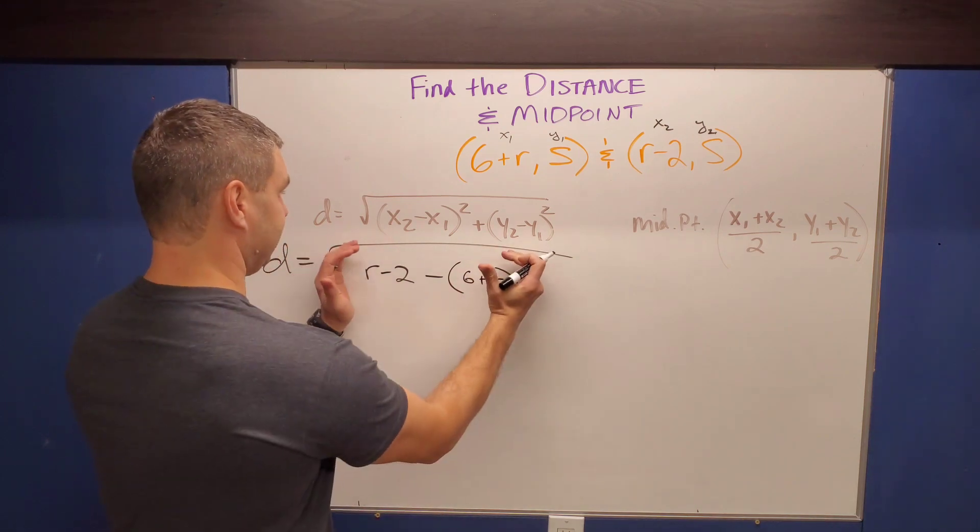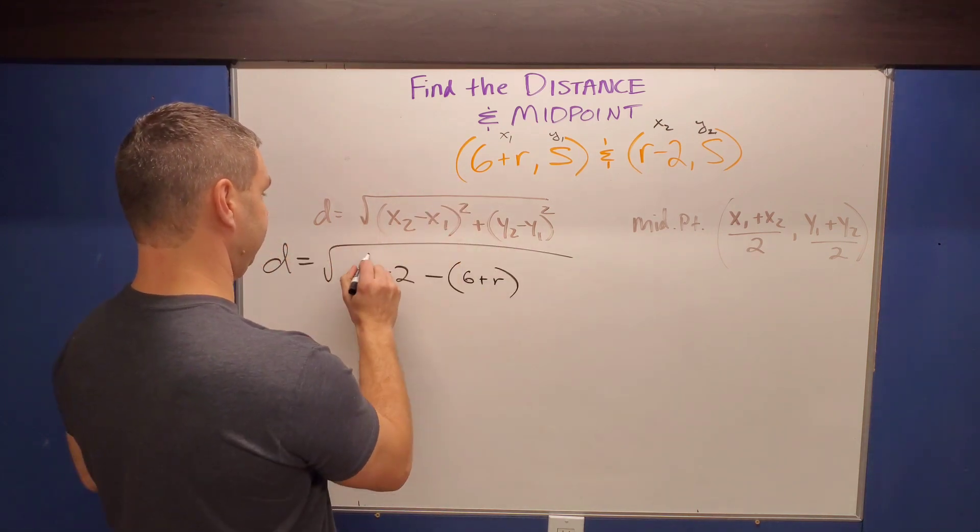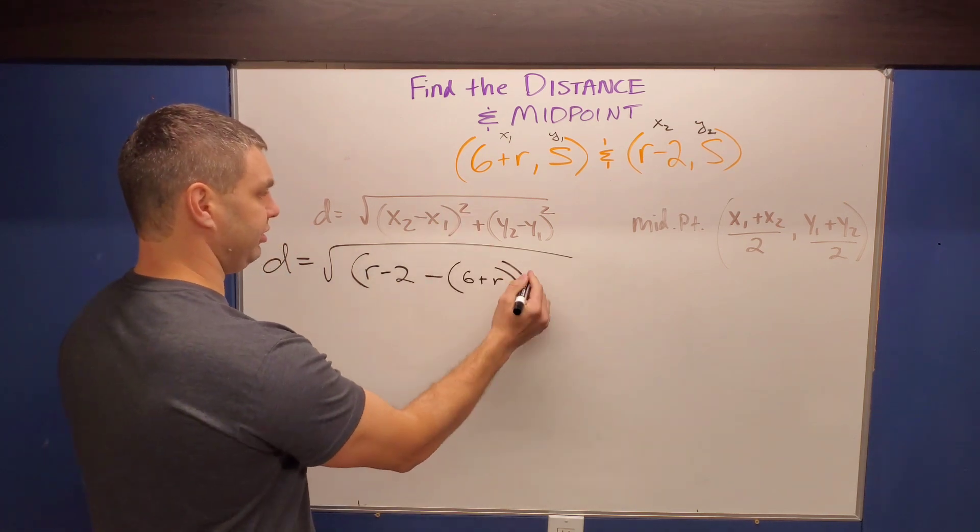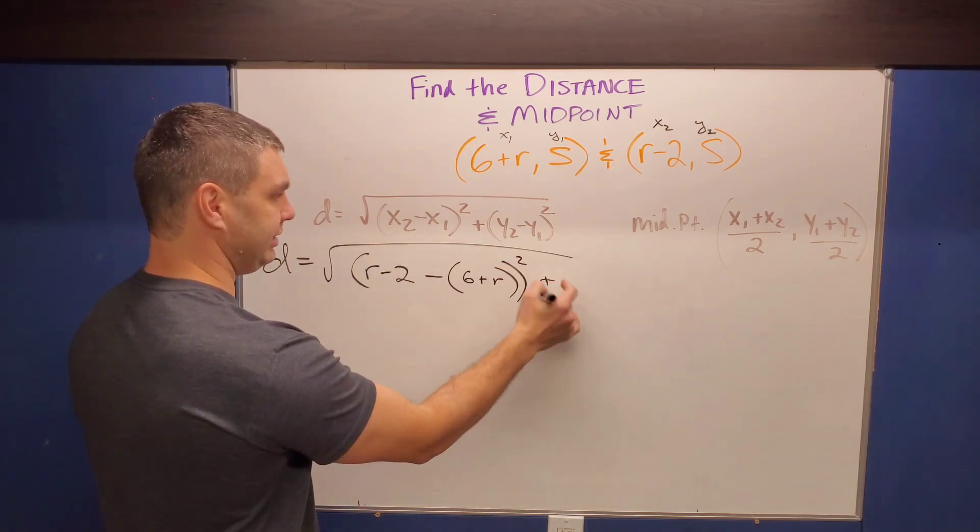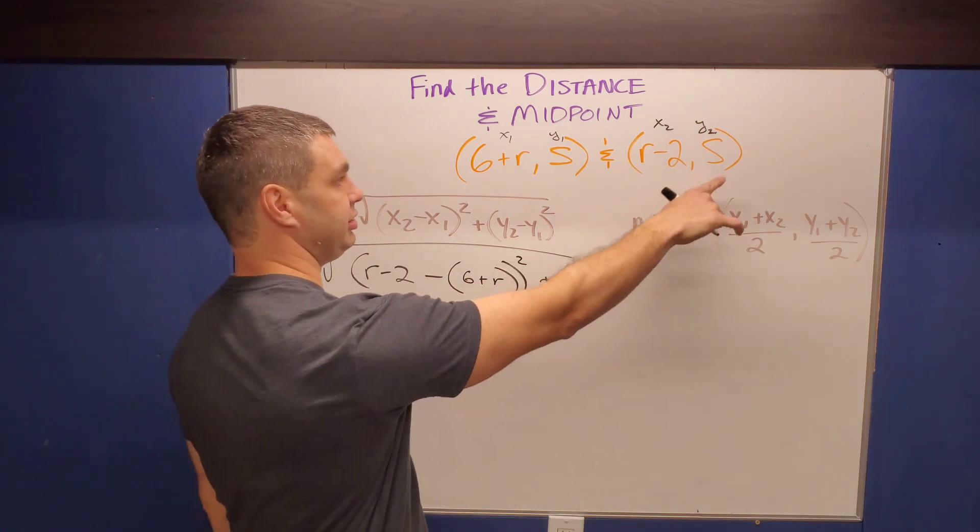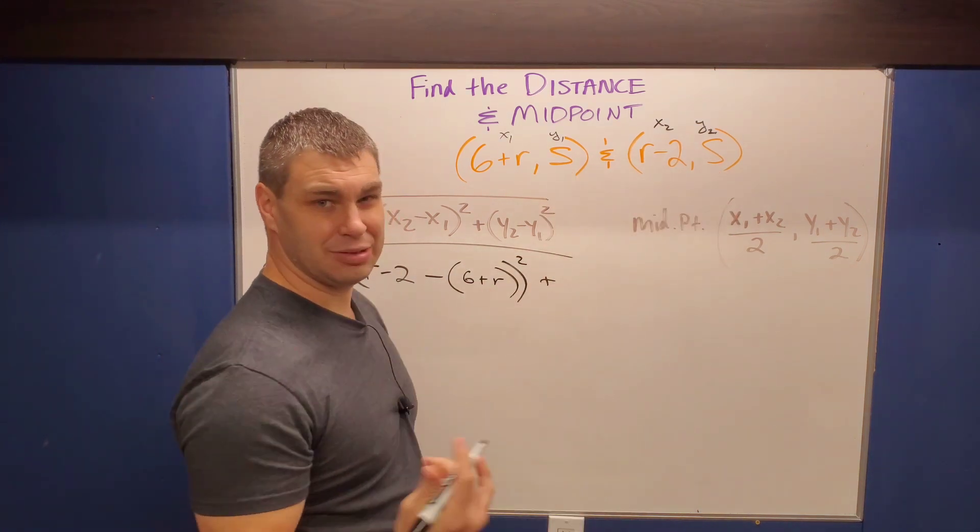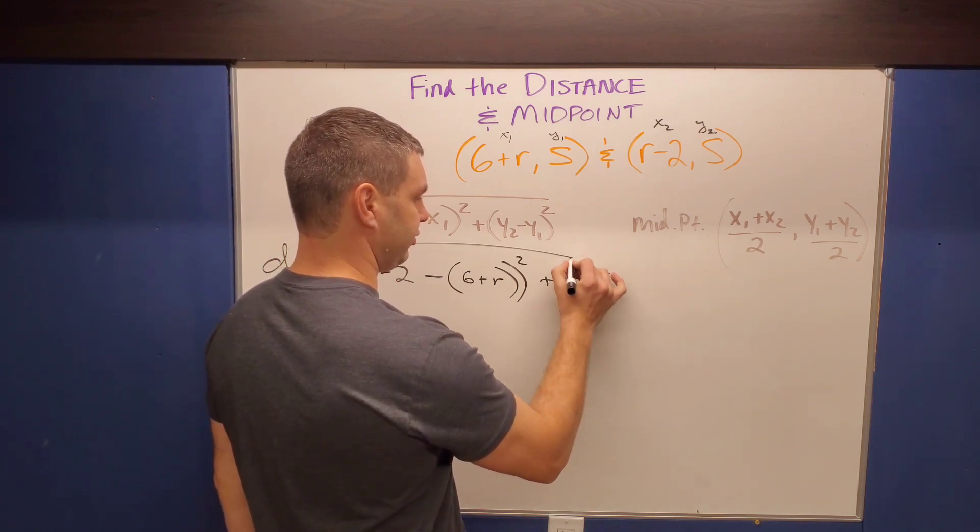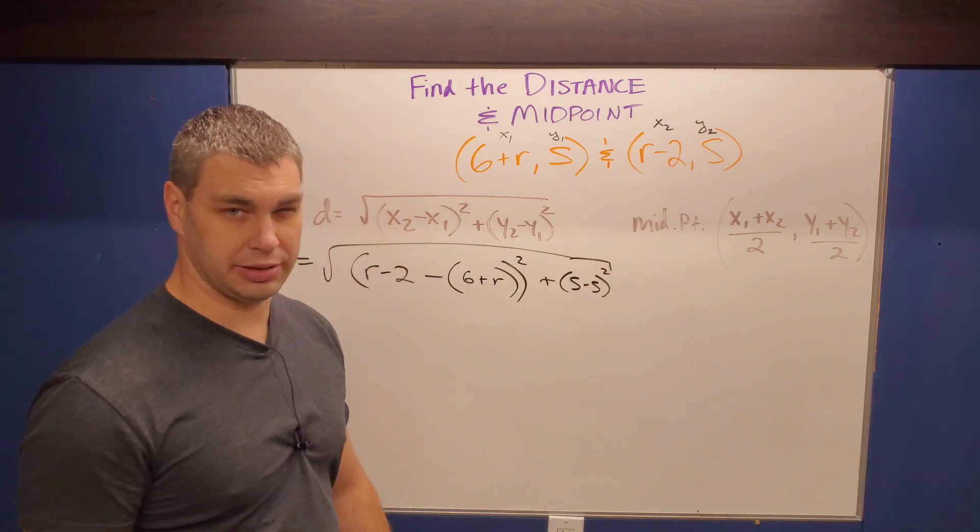Okay. Again, all of that also has to be in parentheses, which are these two parentheses. If you want to use brackets there, that'd be fine as well, but we're going to square it. And then we're going to add together the Y minus Y one or Y two minus Y one, which is just S minus S, which of course is going to be zero. So S minus S squared.